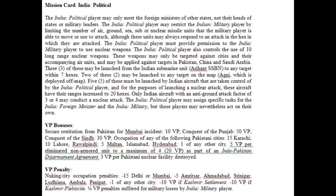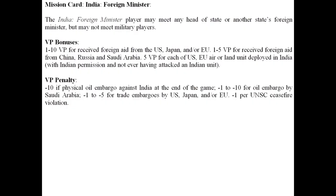The India political player's card shows that Pakistan should give restitution for some incident in Mumbai that started the war, since the game begins with Pakistan and India in a state of war. Victory points are awarded for conquest of different areas and cities, for a disarmament agreement, with penalties for losses or destruction of cities and for a Kashmir settlement or plebiscite. The political player may also be penalized for excessive losses incurred by the India military player.